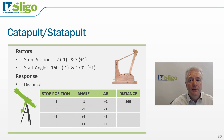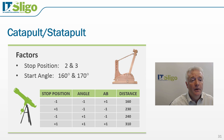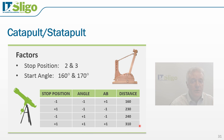Our next step is to conduct this experiment. When we evaluate the stop position at stop position 2 or minus 1 and the start angle at 160 degrees or minus 1, we achieve a distance of 160 centimeters. We then conduct the next set of experimental conditions and continue on to get the following results. For the last treatment combination, when we set the stop position to 3 and the start angle to 170 degrees, we achieve a distance of 310 centimeters.